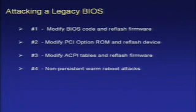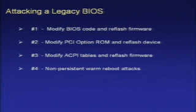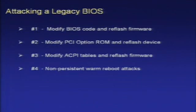Here are four ways we can attack a legacy BIOS — four ways we can persist a rootkit. First, we can reflash the firmware device itself. Second, we can modify the option ROMs on PCI devices and reflash the device. Third, we can modify data modules stored in the BIOS — specifically this attack modifies the advanced configuration and power interface tables. Fourth, and different from the first three, we can persist in memory and survive across reboots without touching firmware or disk.